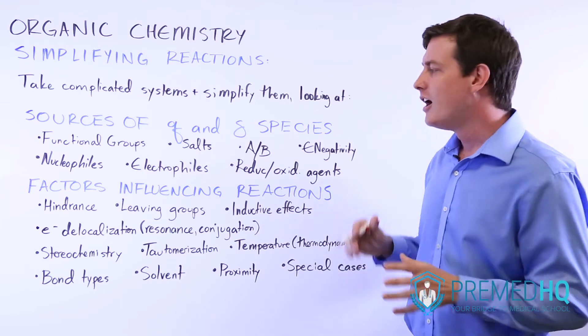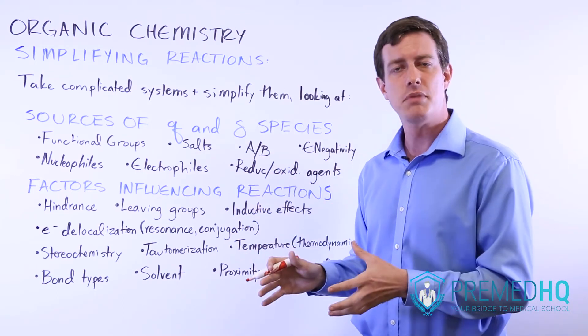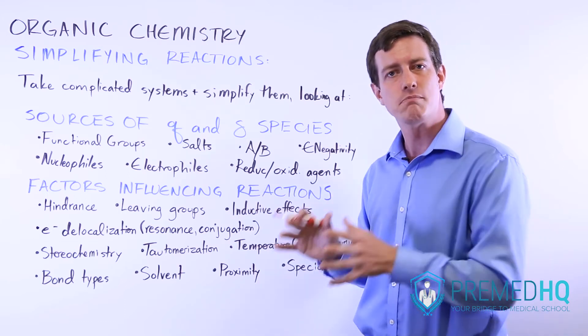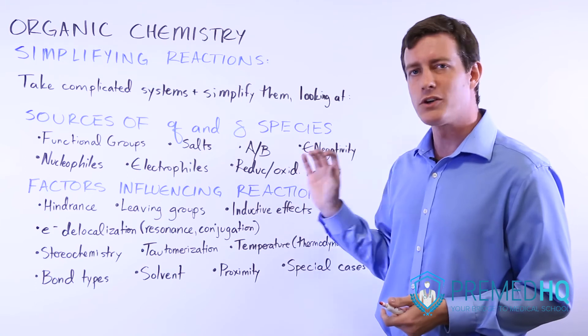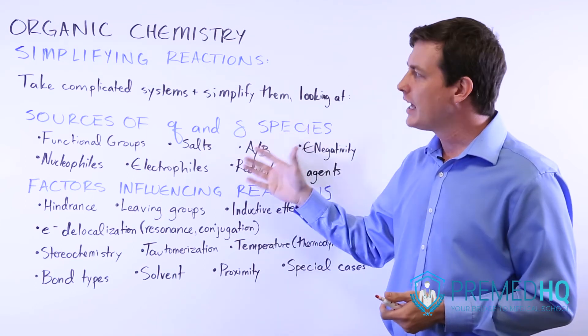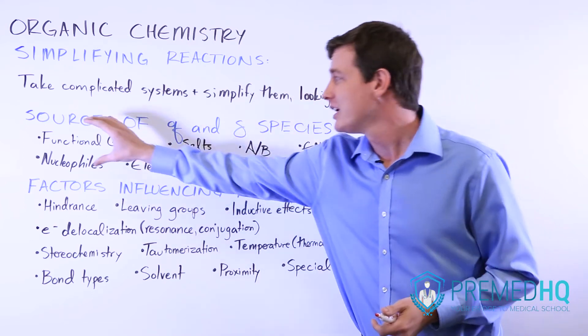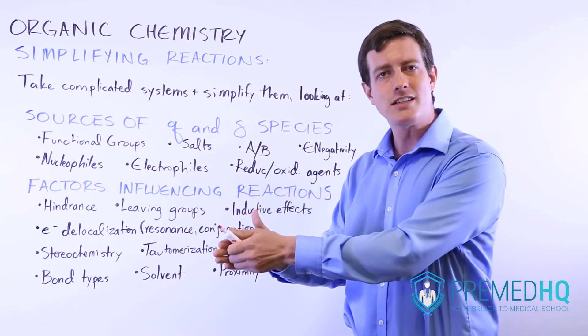All of these are different things that can influence the way that a system will behave and which interaction is most likely to occur. And so once you grasp that organic chemistry is all about those electrostatic interactions, then we can find a way to simplify it by looking at what sources give us the charged species that are most likely to interact first.